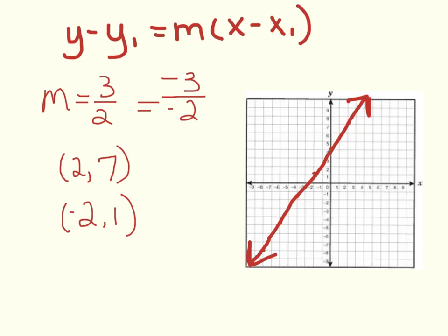So, now we have two points to choose from. In this example, I will choose the 2 comma 7. So, now we're ready to write our point slope equation. But you might be asking, why is there a Y and a Y₁? And why is there an X and an X₁?